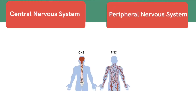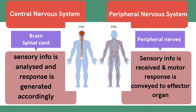First of all, we need to understand that the central nervous system and peripheral nervous system are two main subdivisions of the human nervous system. The central nervous system consists of the brain and spinal cord, as you can see in the given diagram. They analyze the sensory information provided to them and then generate the respective response according to that information.